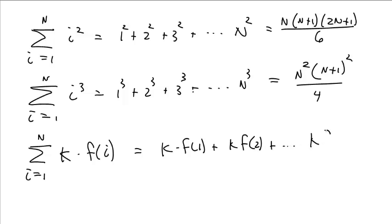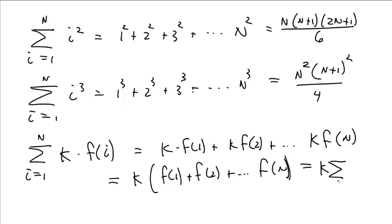And you can just pull all the k's out. That's k times f of 1 plus f of 2 plus f of n. Which is to say, you can take the k out in front of the summation: k times the summation i equals 1 up to n of f of i. That is a useful thing.